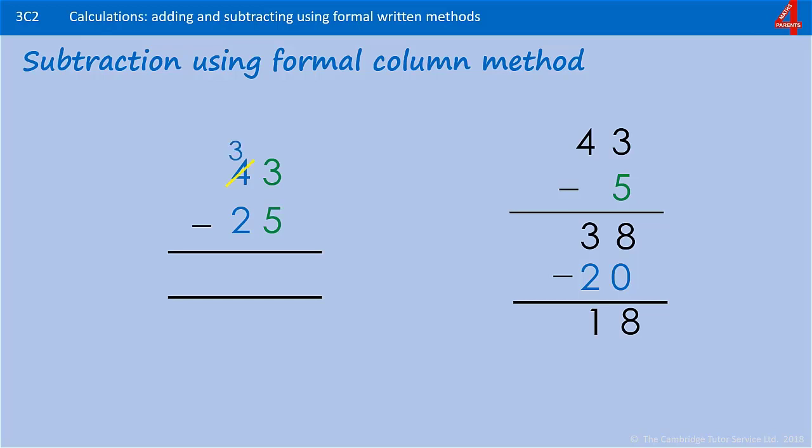That 4 will become a 3. And the one we took away goes in front of the 3 to make 13. Now we can say 13 take away 5 and that's 8. And 3 take away 2, that's 1. The answer is 18.